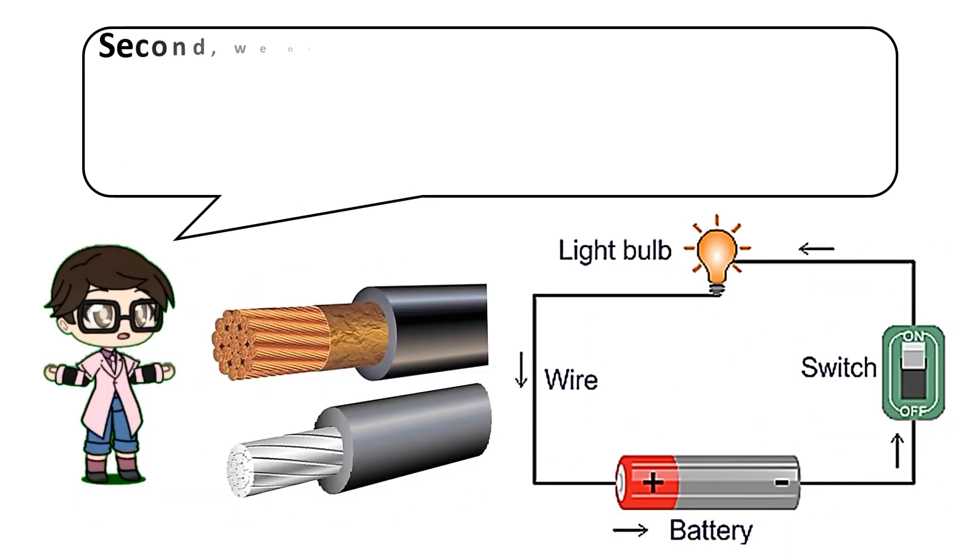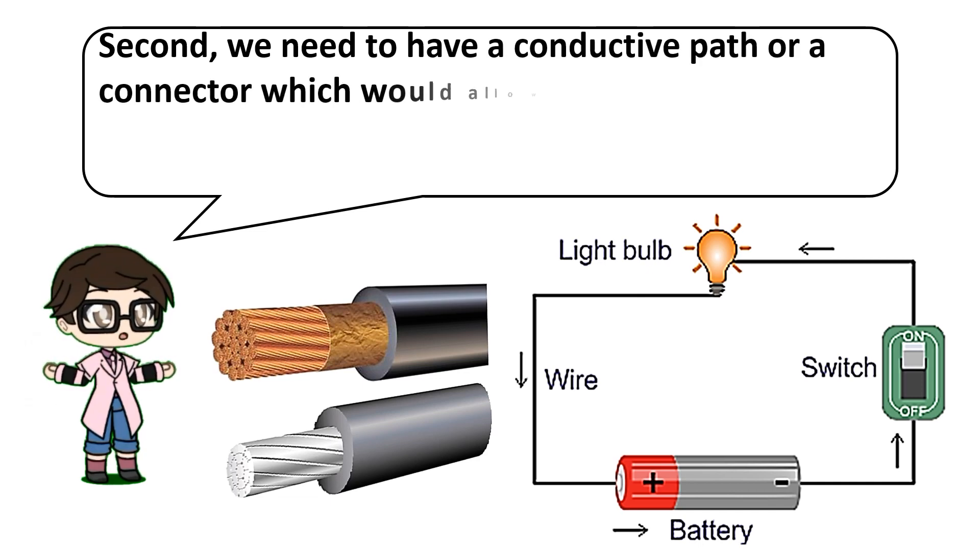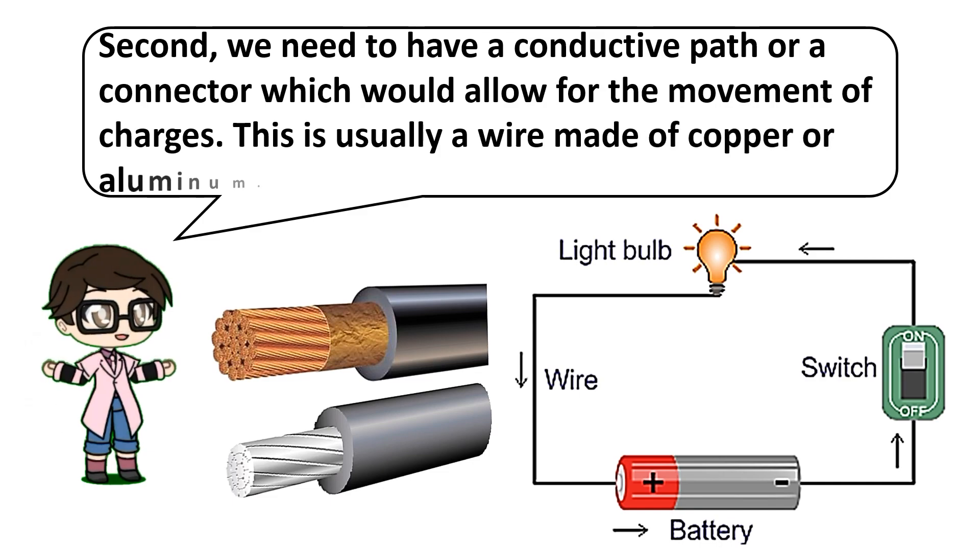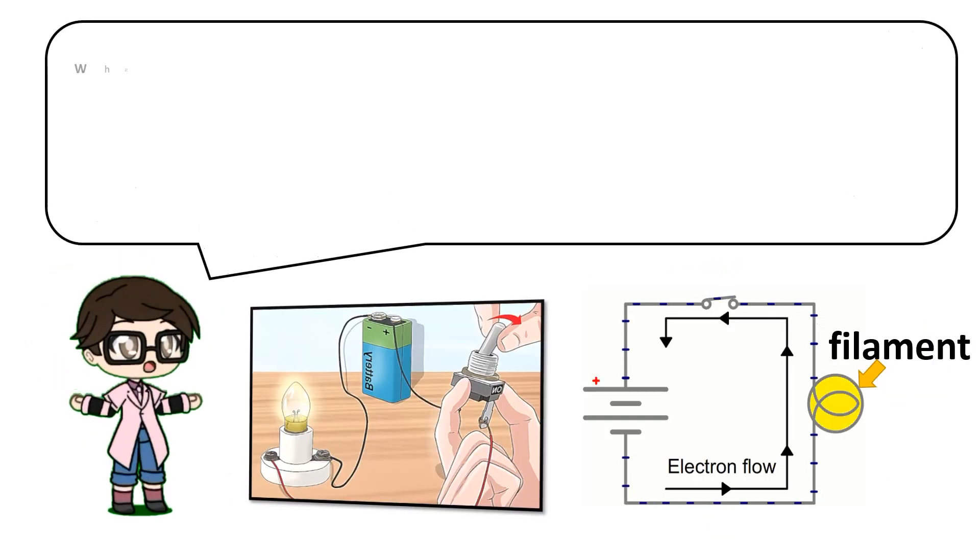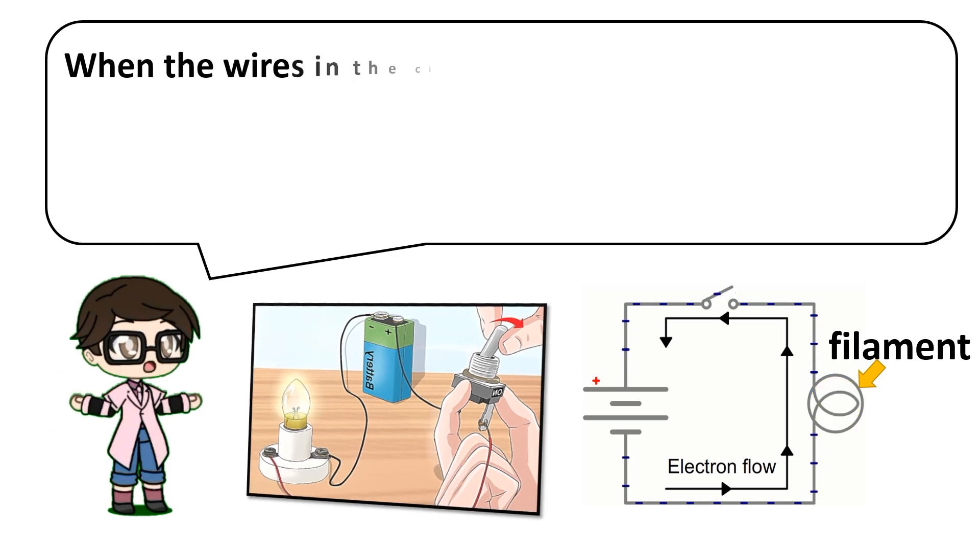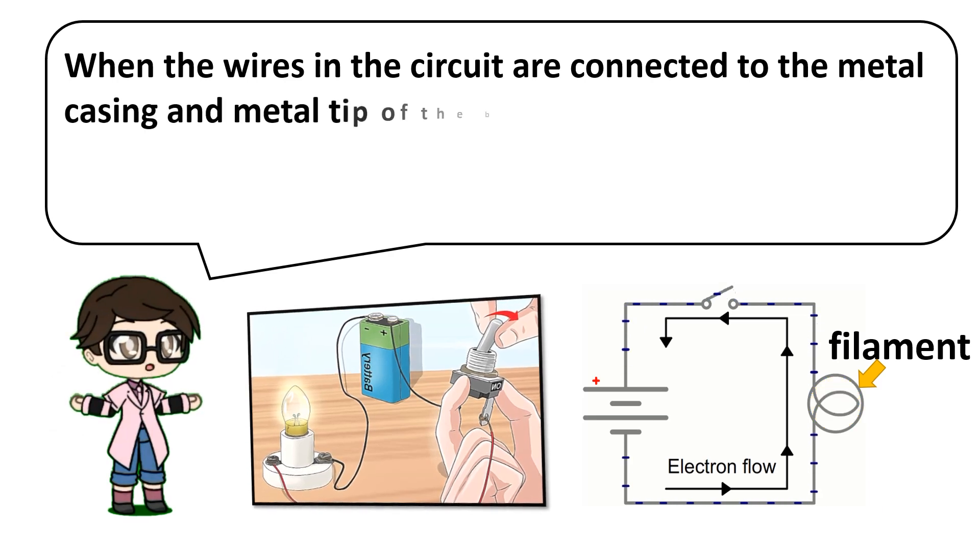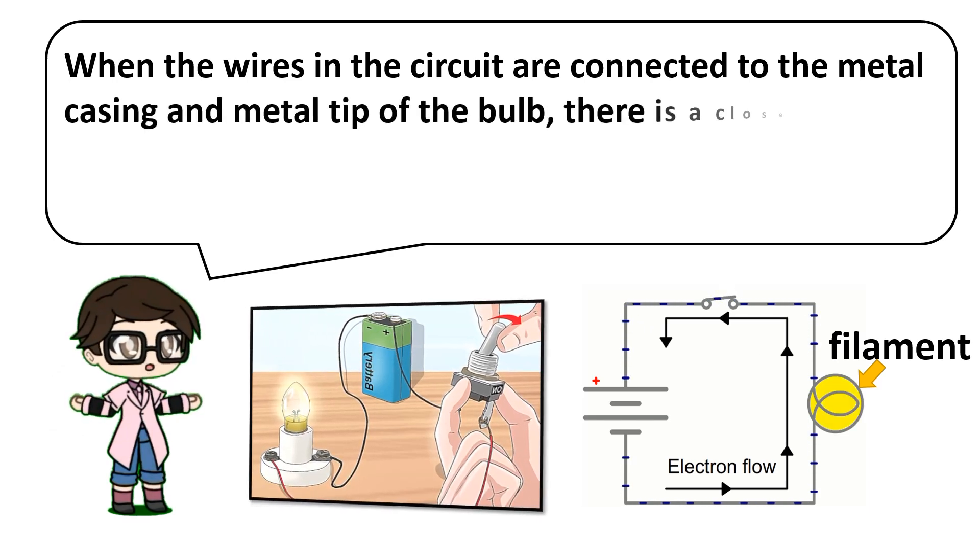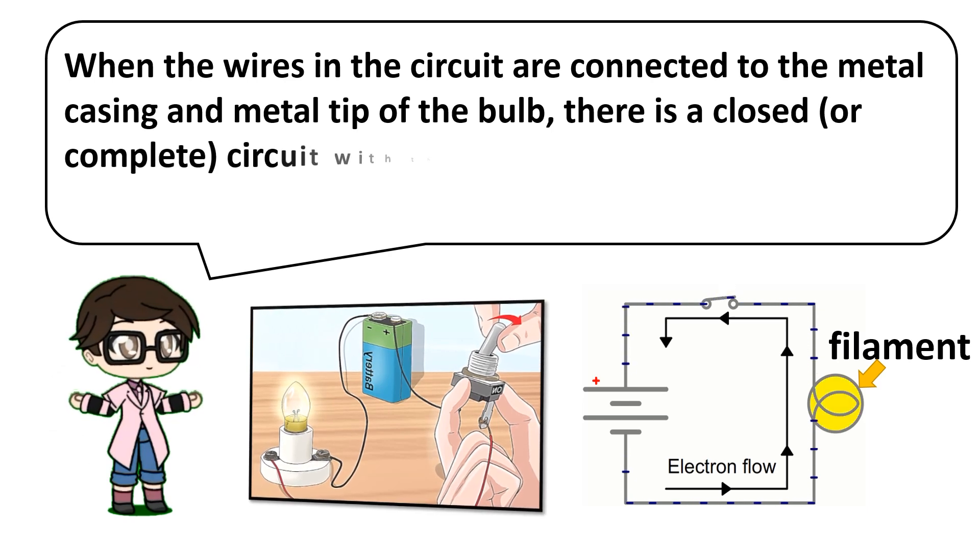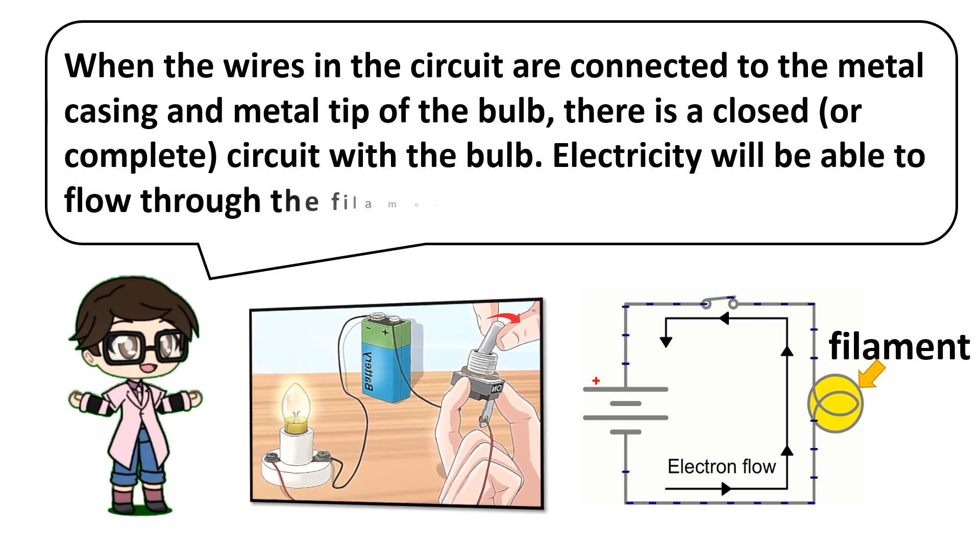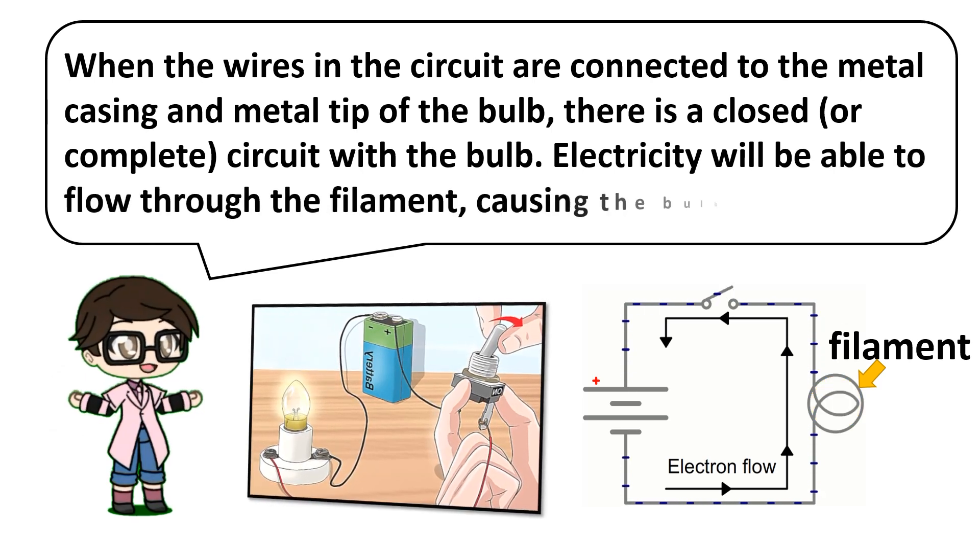Second, we need to have a conductive path or a connector which would allow for the movement of charges. This is usually a wire made of copper or aluminum. When the wires in the circuit are connected to the metal casing and metal tip of the bulb, there is a closed or complete circuit with the bulb. Electricity will be able to flow through the filament, causing the bulb to light up.